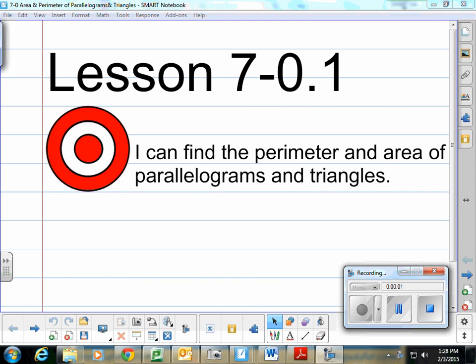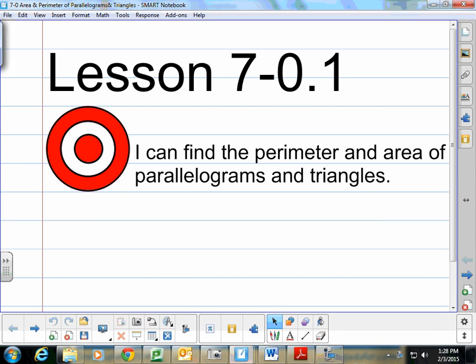Hello, 7th graders. We're beginning Chapter 7. We're actually not in the book—we're on Lesson 7.0.1, Finding Perimeter and Area of Parallelograms and Triangles. You won't find this in a specific lesson in your book. This is pre-Chapter 7, but it deals within Chapter 7. So stick with me, please.